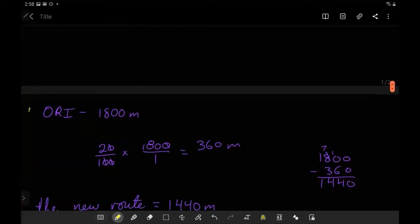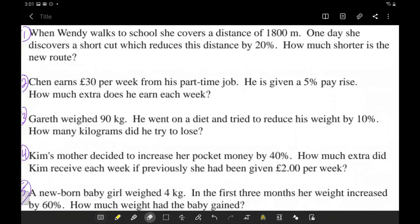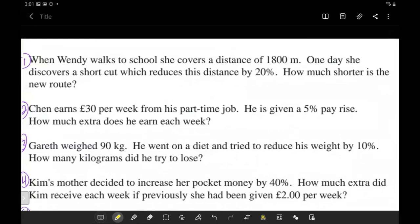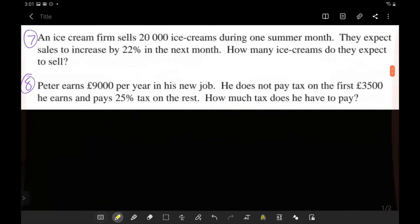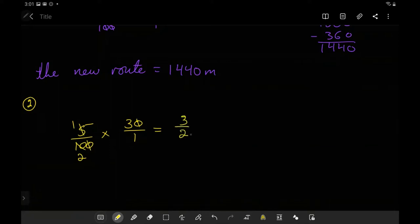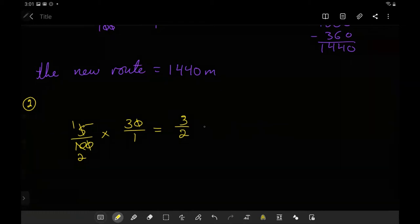Number two tells us Chen earns 30 pounds per week from his part-time job. He is given a 5 percent pay raise. How much extra does he earn each week? They want to know what was his pay raise, not his total amount per week. So we just have to look at what is 5 percent of the 30 pounds. That's 5 percent times 30 pounds. We can cancel, we get 3 over 2. Remember this is money we're dealing with, so we need two decimal places. That will be 1.50 pounds.